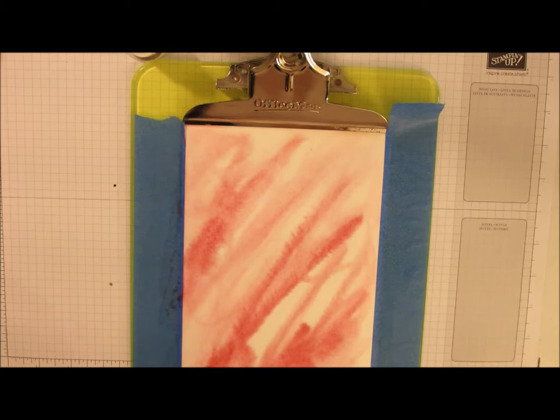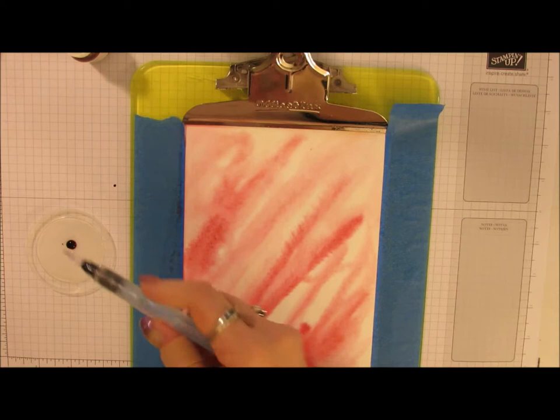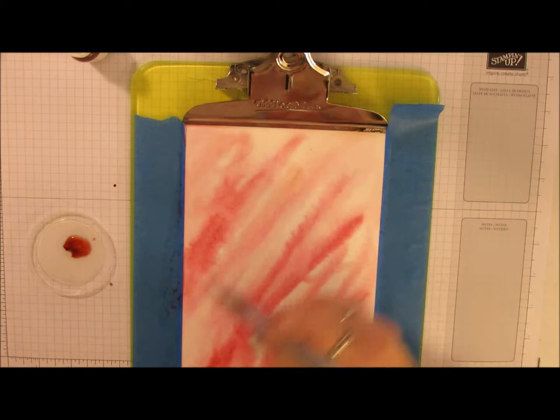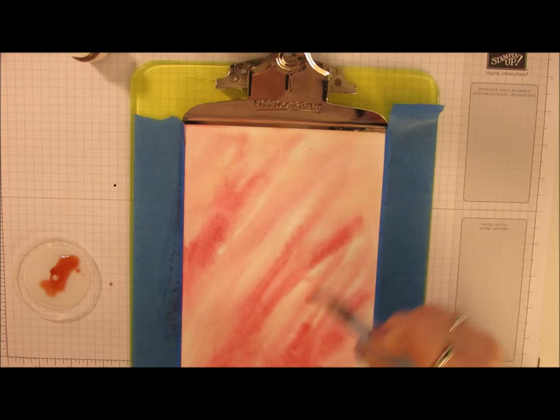The next color I'm going to use is some powder pink - just a couple drops. Dilute that a little and we're just going to go over and fill in where we didn't have any Berry Burst.